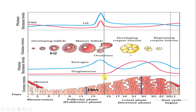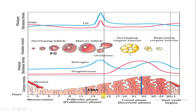The third phase is the ovulatory phase, which is the shortest phase. Here, the Graafian follicle ruptures and releases the secondary oocyte — the ovum — into the pelvic cavity. The main hormone responsible is LH, which surges to cause rupture of the Graafian follicle. This happens on the 14th day, where there is also a mild pain sensation starting in the lower abdomen.